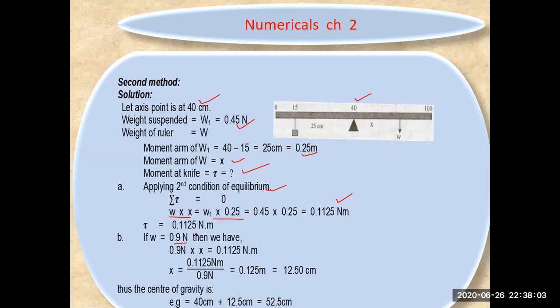If W is 0.9 Newtons, then we use the torque on the other side. The torque produced on one side must equal the torque produced on the other side.